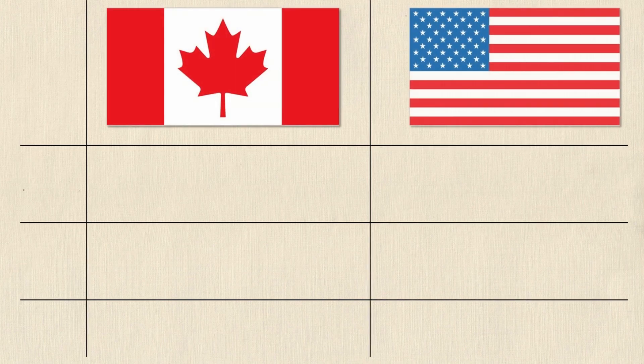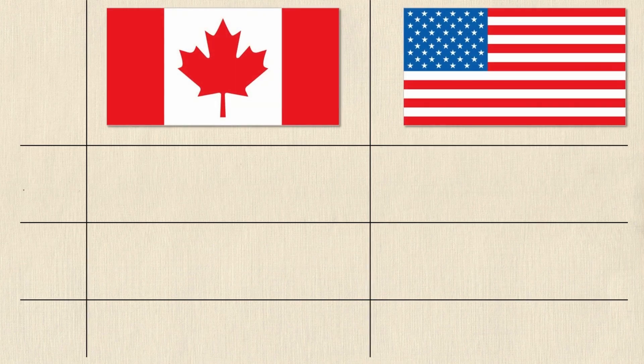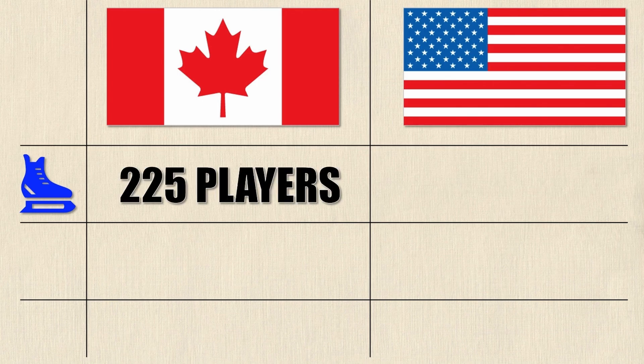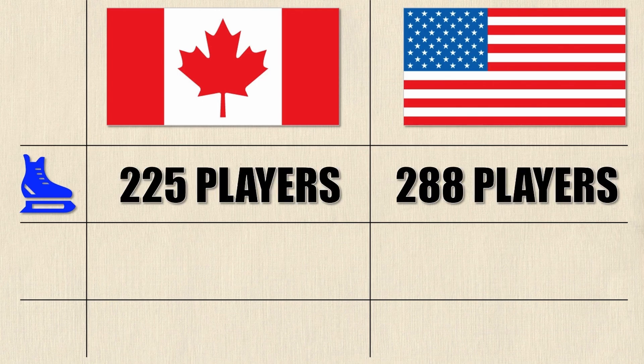The easiest way to learn something is definitely with an example problem and that's what we'll be looking at today. So here we have two countries: the first being Canada and the second being the United States. In this example we're saying that they can produce one of two types of athletes. They can either produce hockey athletes — Canada can produce 225 players or the United States can produce 288 players.